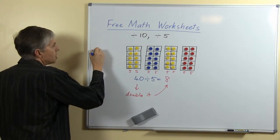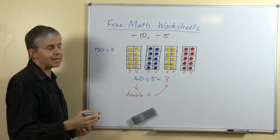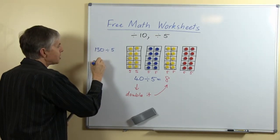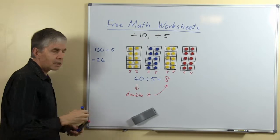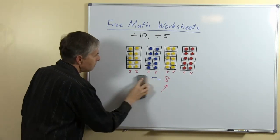So we could go further than this. Say here's an example, 130 divided by 5 what would the answer be? Well it's going to be double 13 or 26. So it works for any multiple of 10. Alright, so far so good.